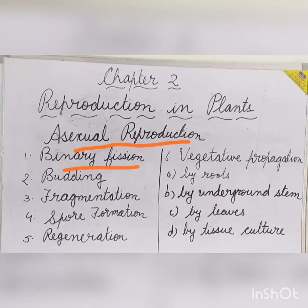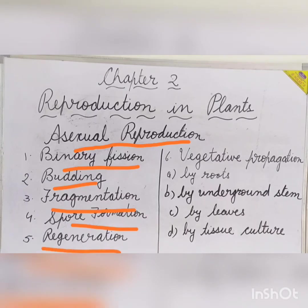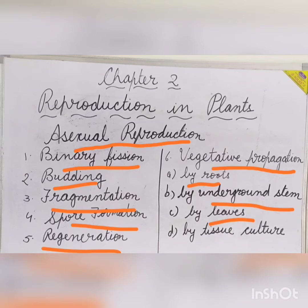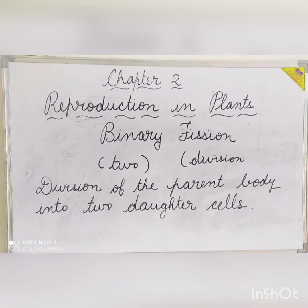There are different types of asexual reproduction in plants which are as follows: binary fission, budding, fragmentation, spore formation, regeneration, and vegetative propagation. Vegetative propagation can be by the means of fruits, underground stems, leaves, and tissue culture. We are going to study in detail about these different types.